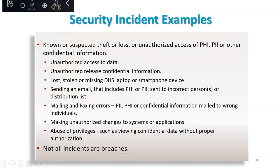Do you limit physical access to PHI to only authorized staff? Do you have policies specifying proper use and access to workstations and how staff should handle mobile devices and electronic media? Do you allow removable media such as USB devices, and are they encrypted? Do staff know to lock their computers when they leave their desk? These are all fundamental questions that the Office for Civil Rights asks during breach investigations.